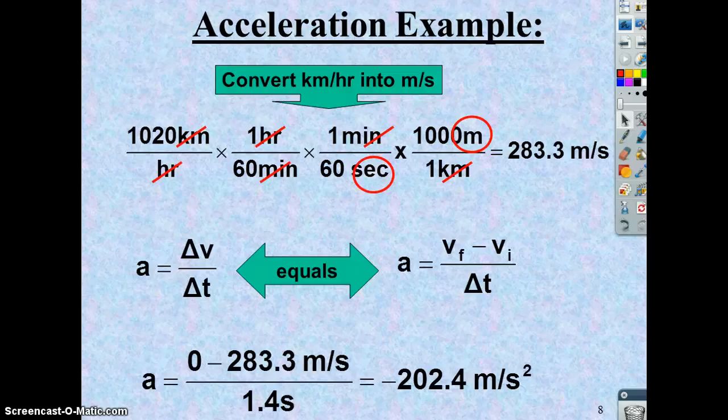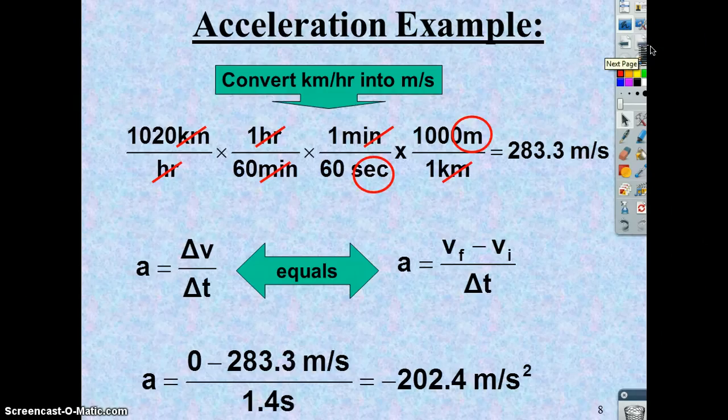Sometimes we refer to these cases in terms of g's. The acceleration due to gravity is roughly 10 meters per second squared. So this person would have been experiencing roughly 20 g's of acceleration.